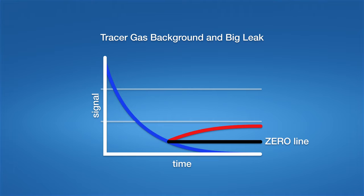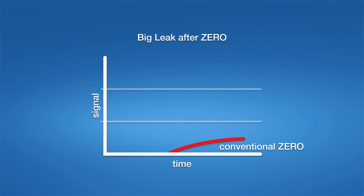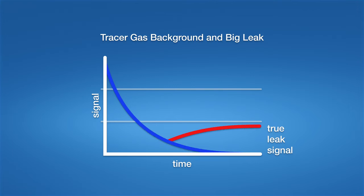With the conventional zero functions available in the industry, only the signal above the black zero line can be shown on the leak detector as leak rate. Then it will look like this, but we know that the real leak size is bigger than that. The real leak size is the difference between the blue curve and the red curve.